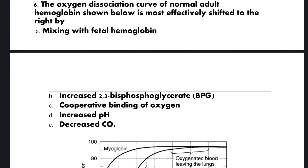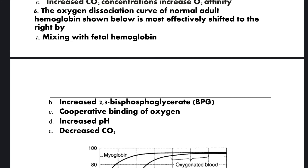Question 6: The oxygen dissociation curve of normal adult hemoglobin is most effectively shifted to the right by: A) mixing with fetal hemoglobin, B) increased 2,3-bisphosphoglycerate (BPG), C) cooperative binding of oxygen, D) increased pH, E) decreased CO2. The correct option is B: increased 2,3-bisphosphoglycerate.